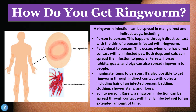The disease can also be spread from a pet or an animal to a person, and this occurs when one has direct contact with an infected pet. Both dogs and cats can spread the infection to people. Ferrets, horses, rabbits, goats, and pigs can also spread ringworm to people. There are quite a vast variety of domesticated animals which can get the tinea corporis infection and spread it to humans as well.